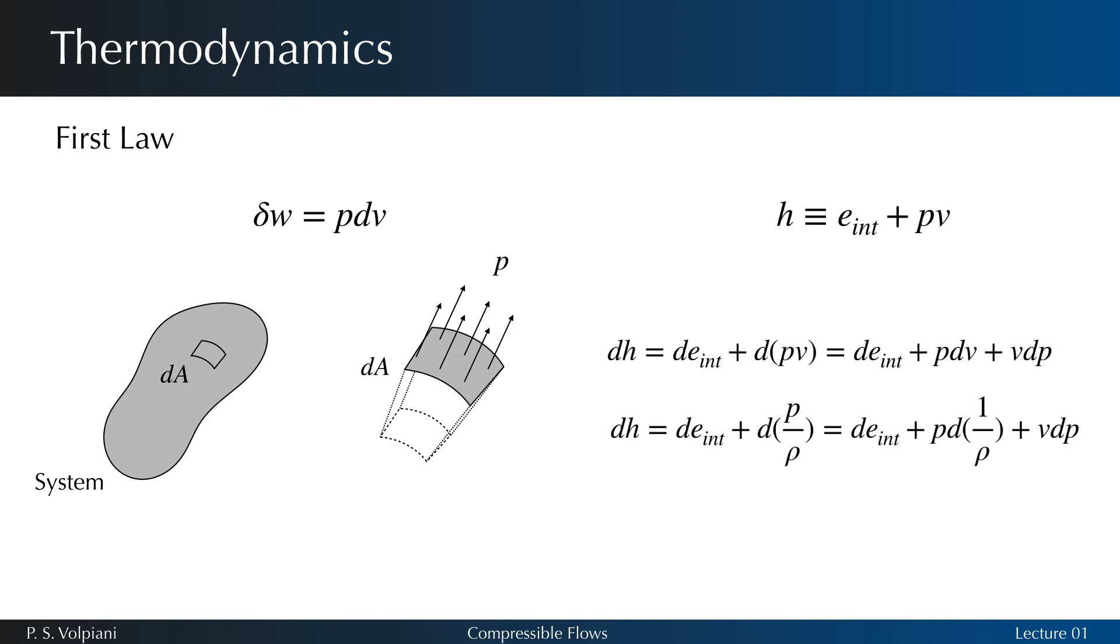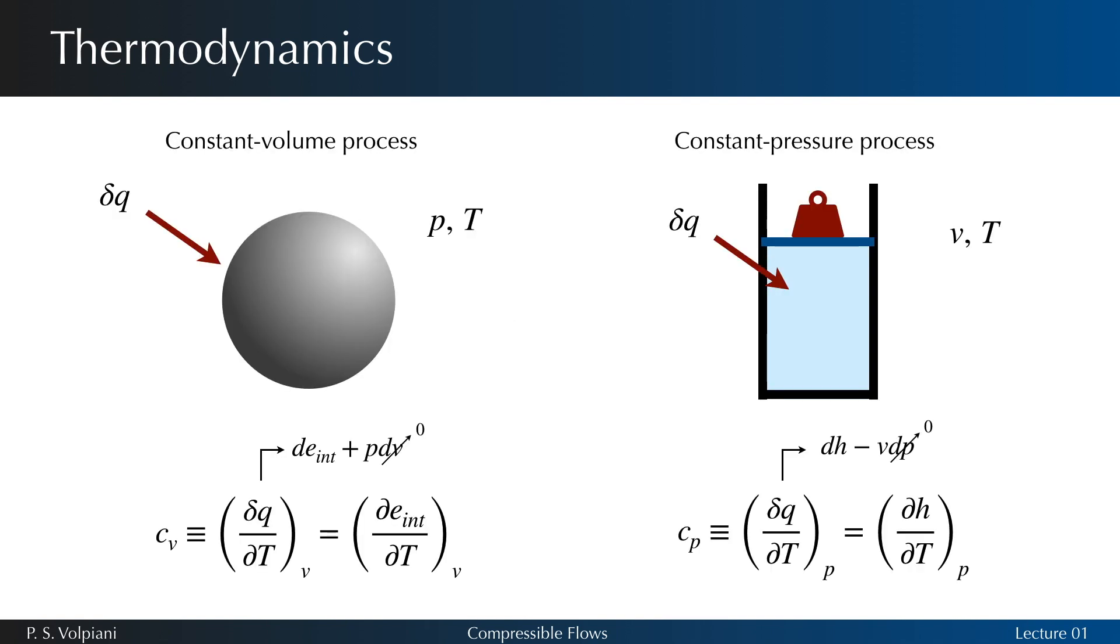It's convenient to define the property enthalpy as the sum e_int + pv. In differential form, we obtain these expressions. Other examples of defined properties are the specific heats at constant pressure, Cp, and constant volume, Cv.